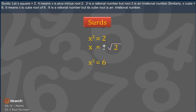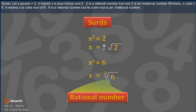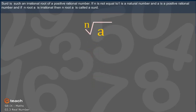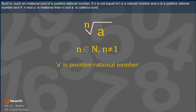Similarly, x cubed is equal to 6. It means x is the cube root of 6. 6 is a rational number but its cube root is an irrational number. A surd is such an irrational root of a positive rational number. If n (not equal to 1) is a natural number and a is a positive rational number, and if the nth root of a is irrational, then the nth root of a is called a surd.